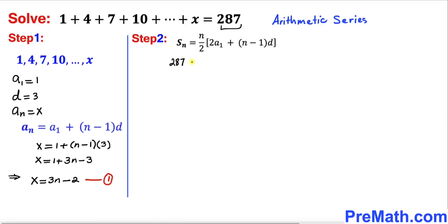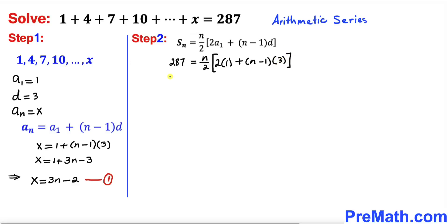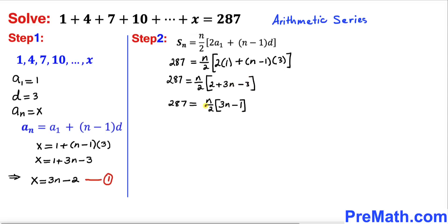Filling in the formula: 287 equals n divided by 2, times the quantity 2 times 1 plus n minus 1 times 3. Simplifying inside the bracket: 2 times 1 is 2, and distributing gives 3n minus 3. To remove the fraction, we multiply both sides by 2, giving 574 equals n times the quantity 3n minus 1.